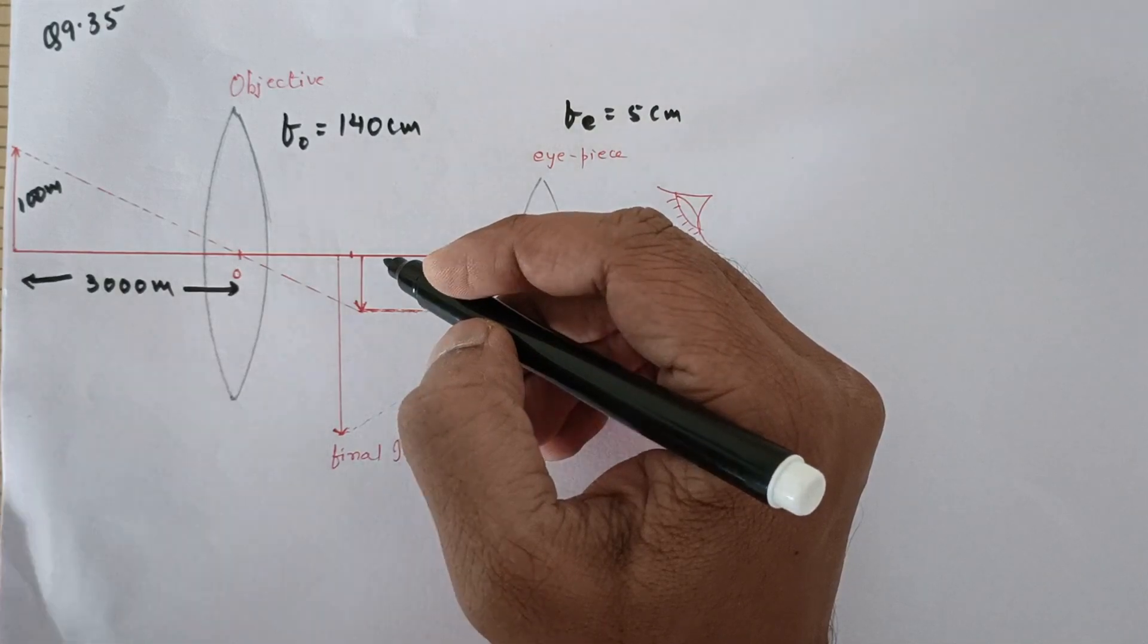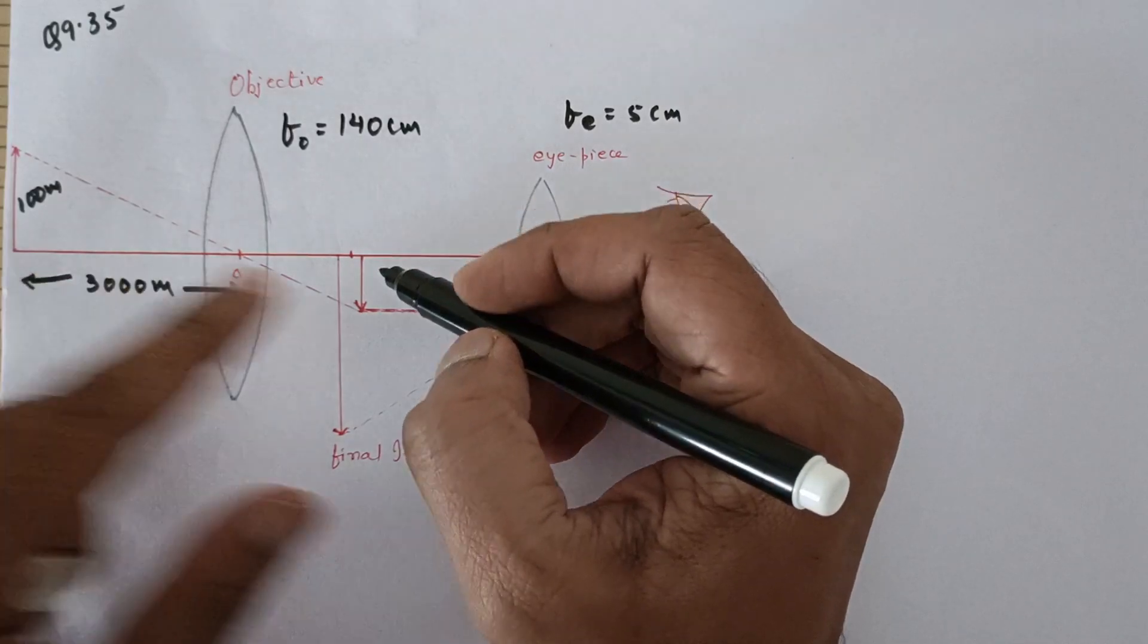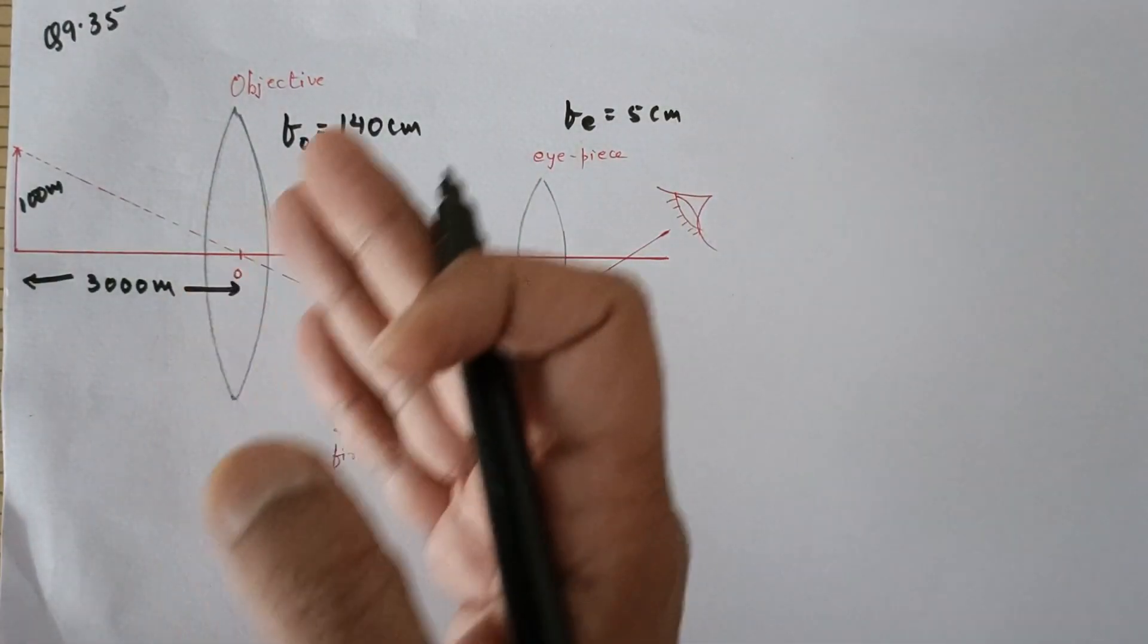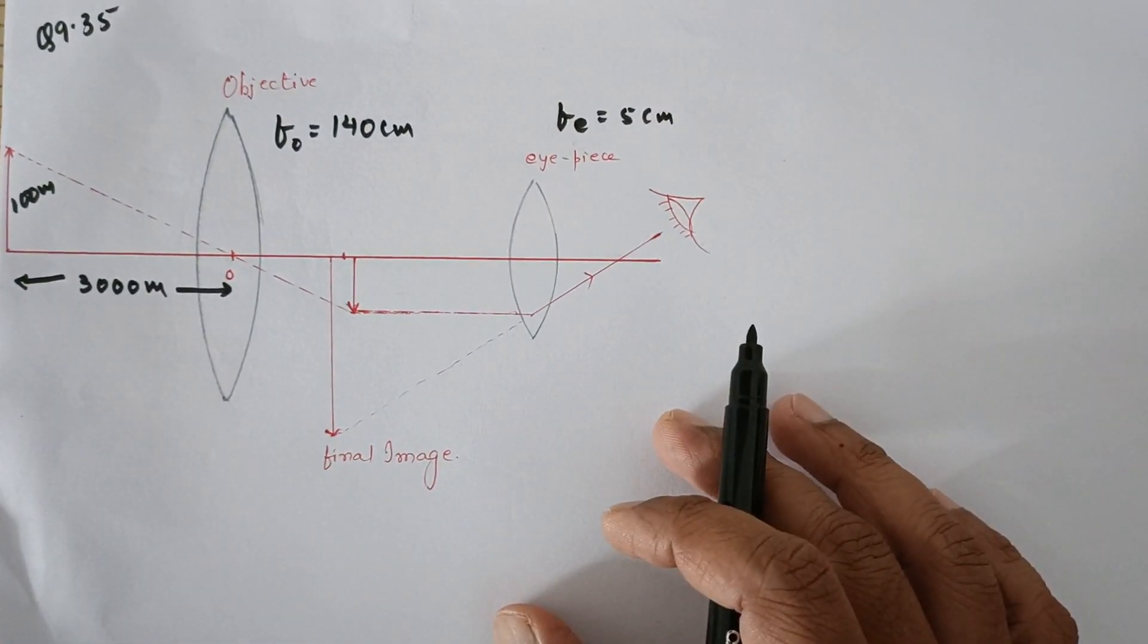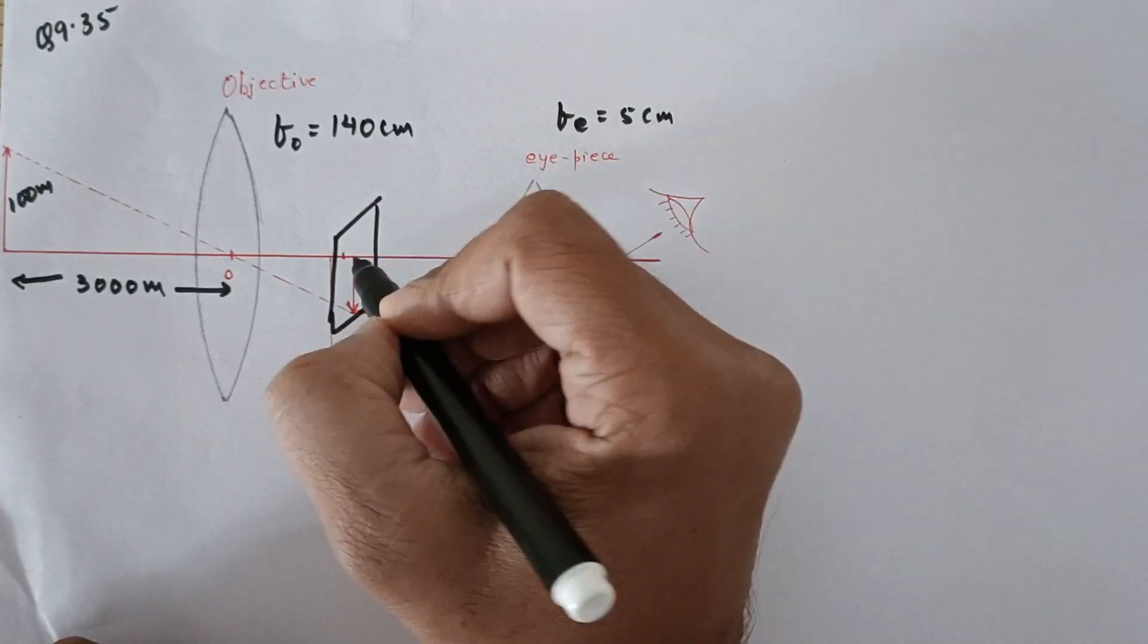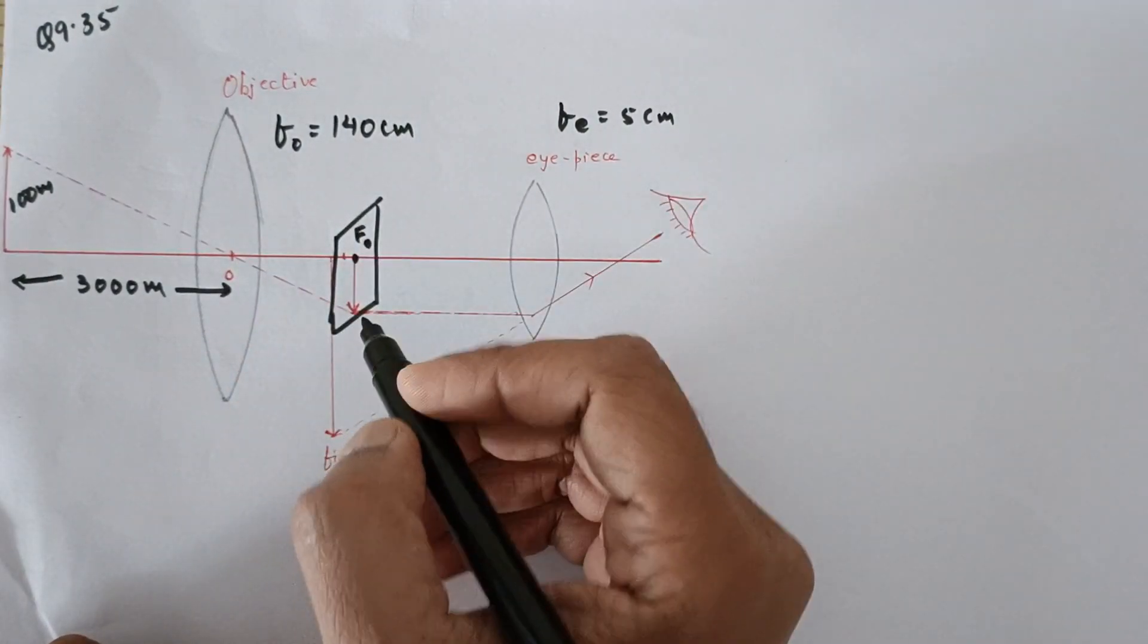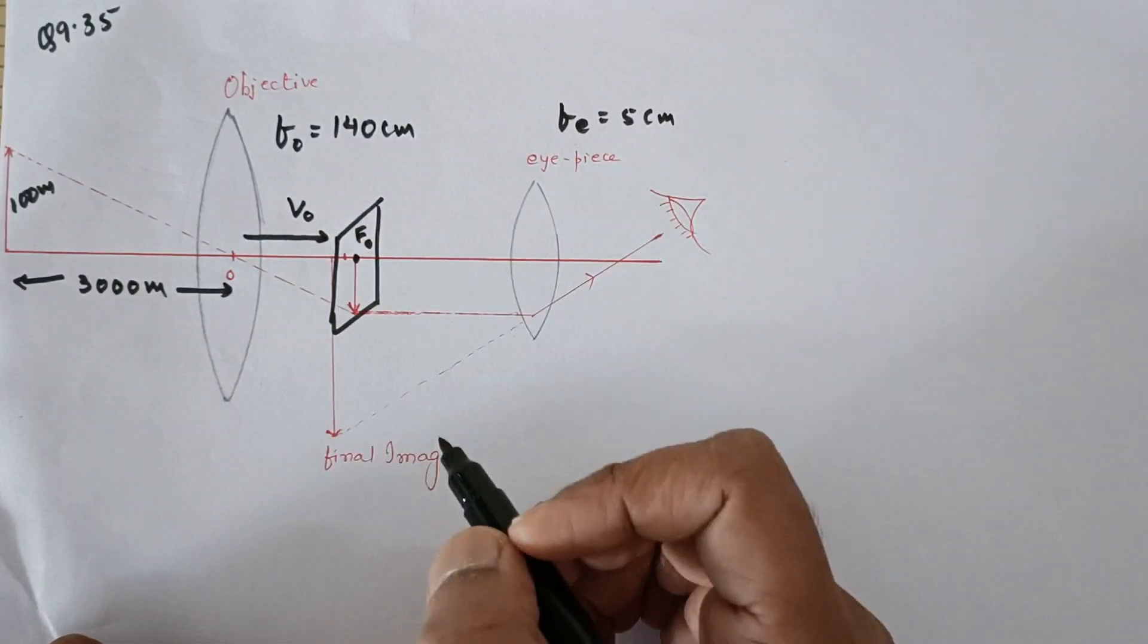When you say an object at infinity, you mean sun, star, moon, etc., and their images are formed at focus. But now this object is not practically at infinity; it is at very large distance compared to the focus, so the image is formed at the focal plane. This is the focal plane and this point is the focus of the objective. So the image distance itself becomes the focal length. This is the image distance, I should say Vₒ, which is equal to the focal length.